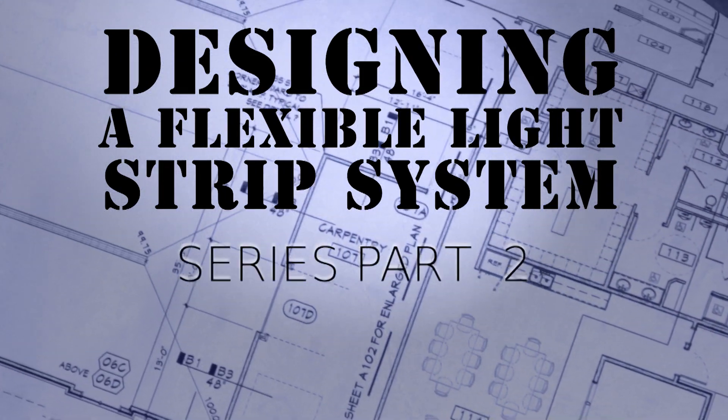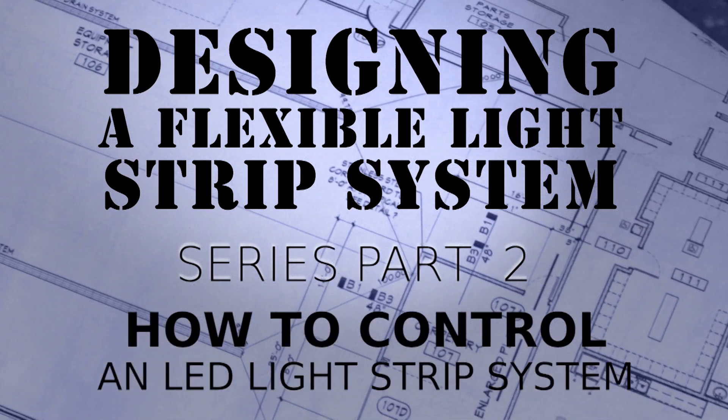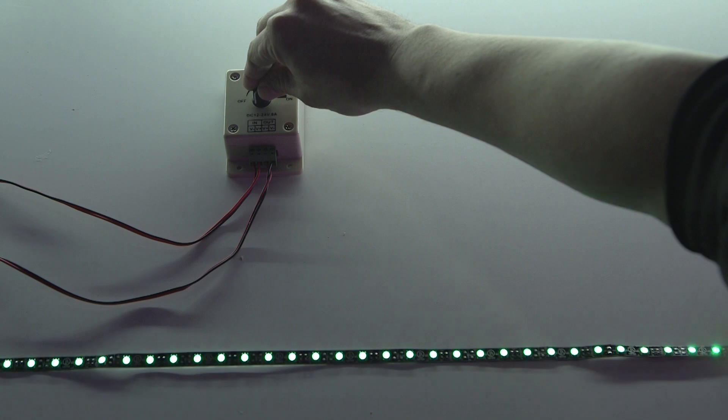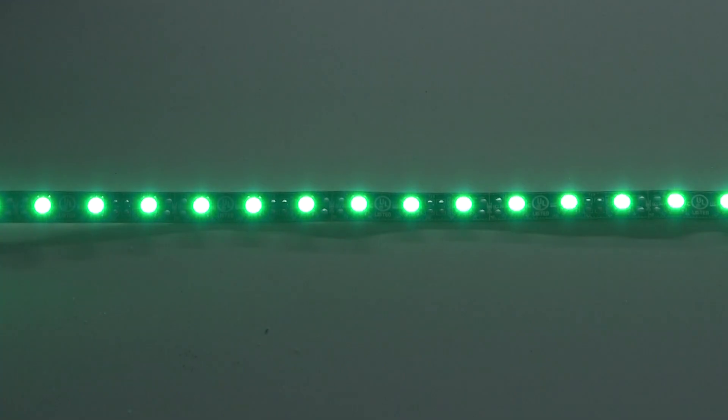Now that we have discussed how to power your light strips, it's time to control them. For using a single color light strip, the only control options that we offer are going to be either dimming or strobing the strips.